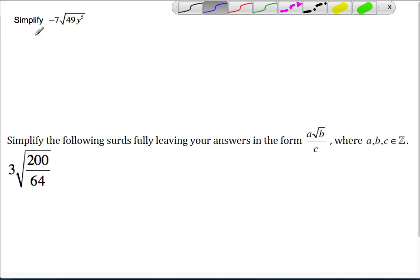This example here is a little bit more complicated. We're asked to simplify the third minus 7, and then under the square root is 49y to the power of 5. You see this algebraic part makes it a little bit more challenging.